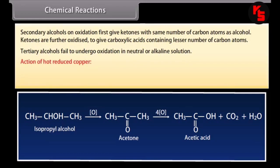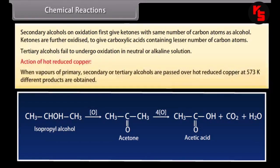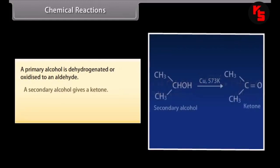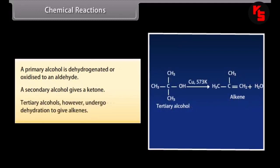Action of hot reduced copper: when vapors of primary, secondary or tertiary alcohols are passed over hot reduced copper at 573 K, different products are obtained. A primary alcohol is dehydrogenated to an aldehyde; a secondary alcohol gives a ketone; tertiary alcohols undergo dehydration to give alkenes.